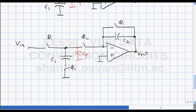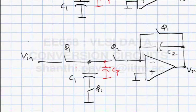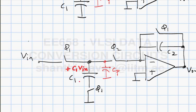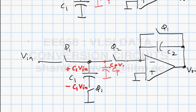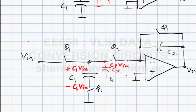The moment phi1 is closed and opened: the charge on the top plate of C1 is C1·Vin; on the bottom plate is -C1·Vin. The charge on the top plate of Cp is Cp·Vin, and on the bottom plate is -Cp·Vin.